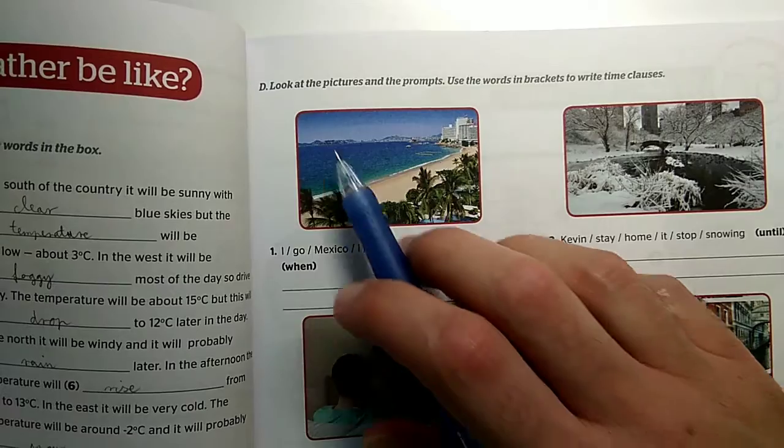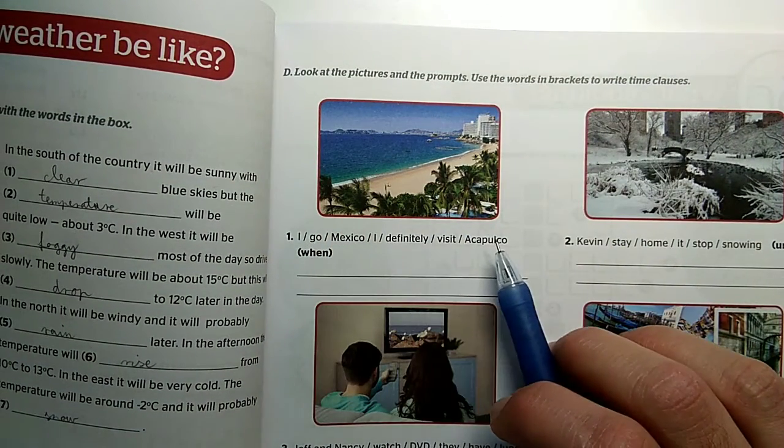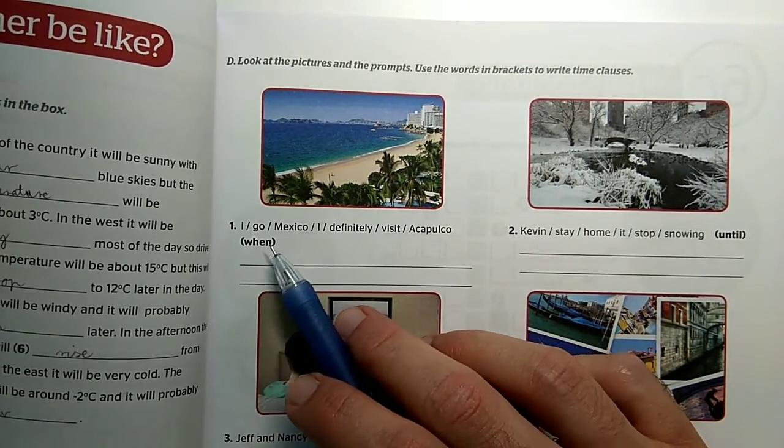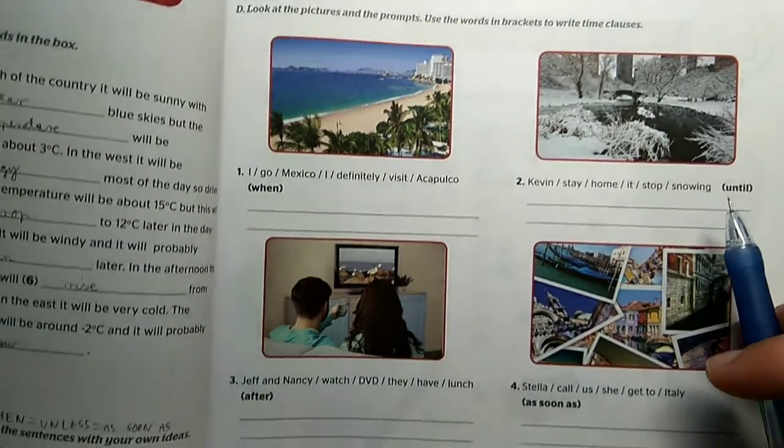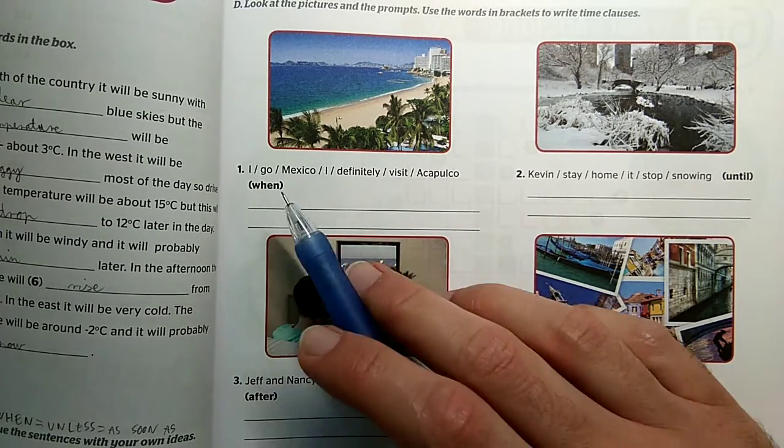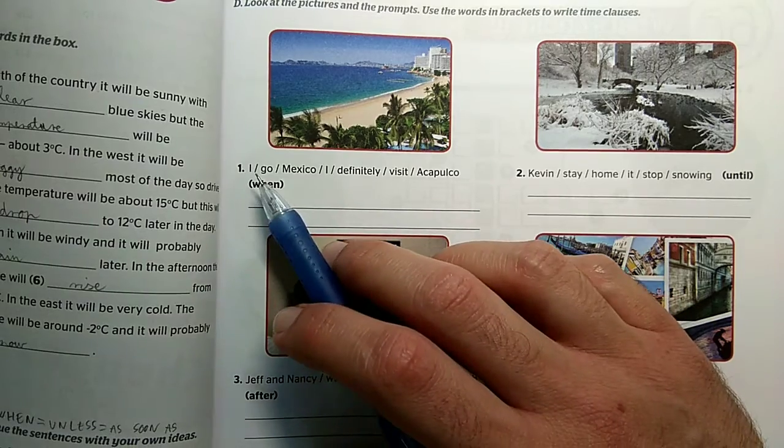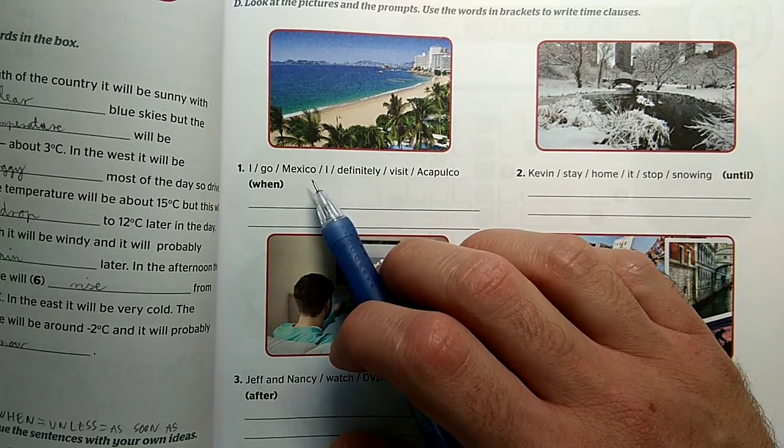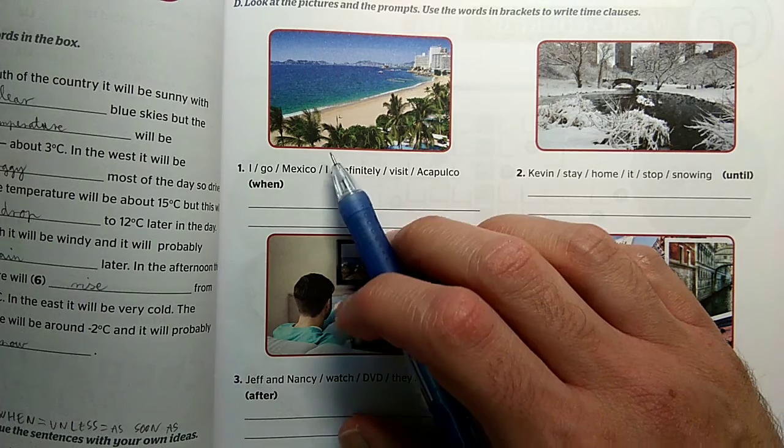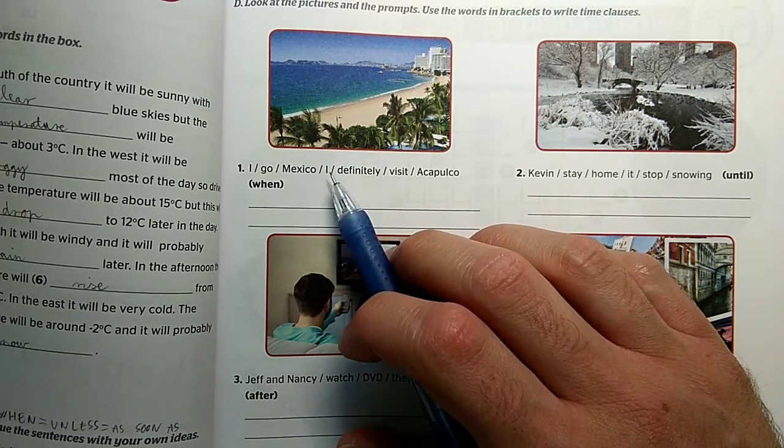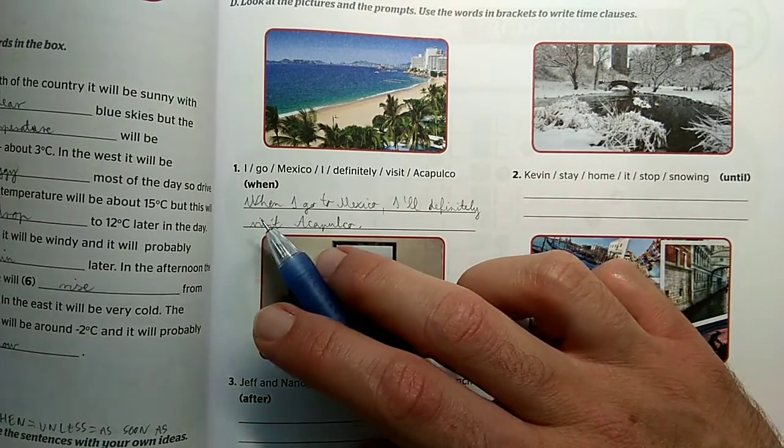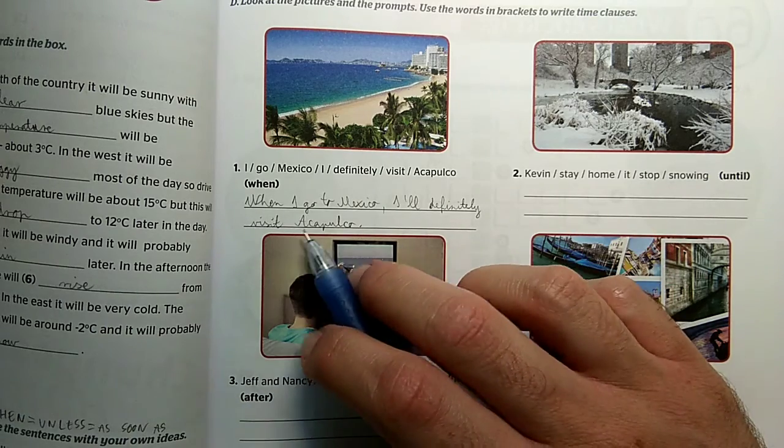The next activity is activity D, where with the help of these prompts and the pictures we have to make sentences in first conditional with the help of when or until, as soon as, after and so on. Again, I'm saying these all actually replace if. For example, I will go to Mexico, I will definitely visit Acapulco. So we can say when I go to Mexico, if clause, not if clause, I will definitely visit Acapulco. So now not if but when I go to Mexico, I'll definitely visit Acapulco.